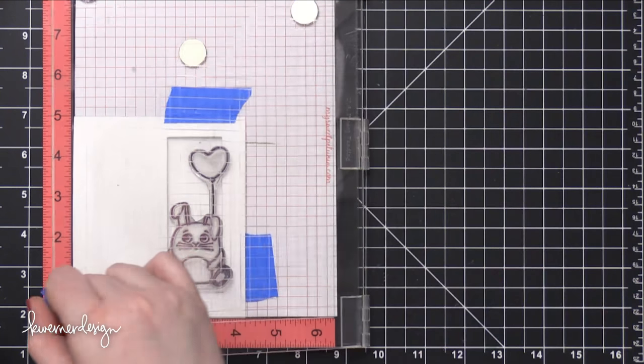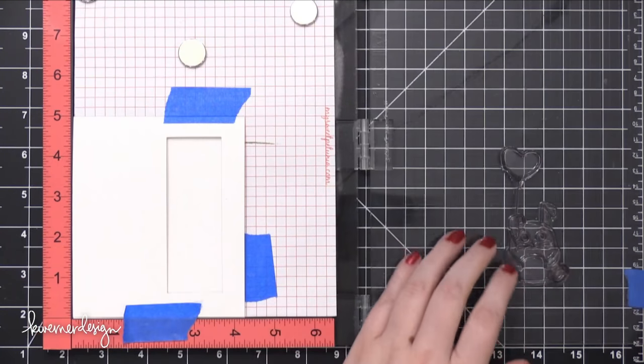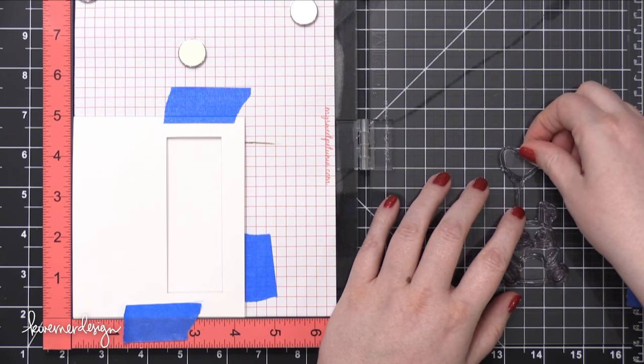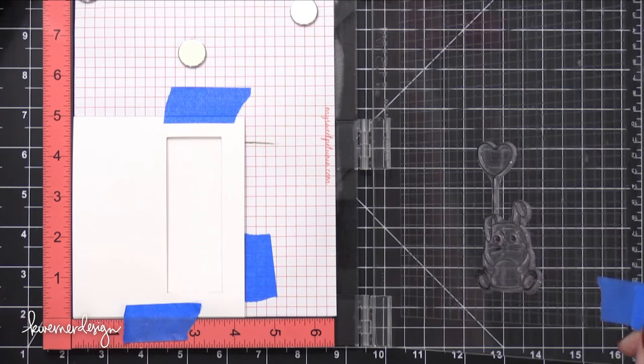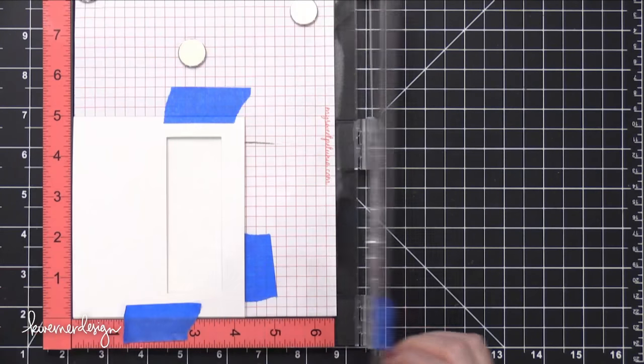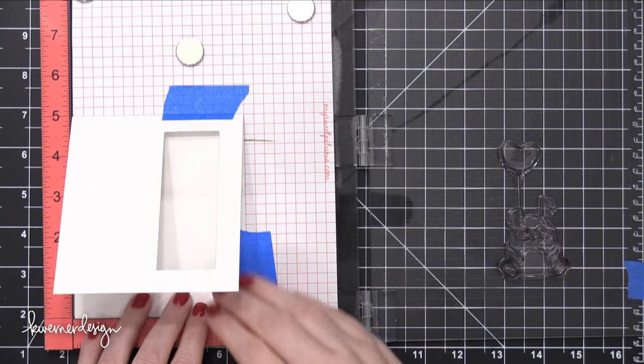So I placed some stamps here. The little bunny is from Simon Says Stamp's Cuddly Critters stamp set, and then the balloon is from the Cuddly Critters accessories. I actually trimmed that balloon stamp so it was a little bit shorter so it would fit inside the window. If I ever need to stamp that balloon again, I can always mount them together.